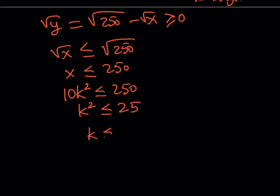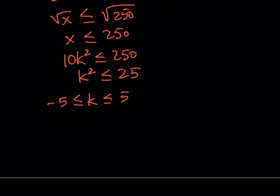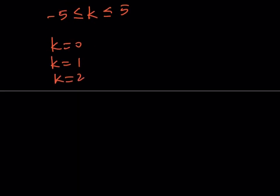So K can be, you know, it's going to be between negative 5 and 5. But again, the negative values don't really matter here. So I can safely say that I can replace K with 0. I can replace K with 1. I can replace K with 2, 3, 4, and 5. So this is basically going to give us six solutions, right? As ordered pairs. Let's go ahead and find each one.